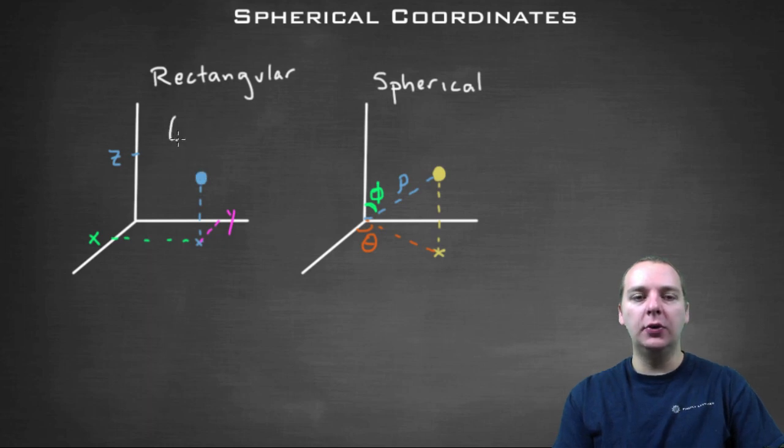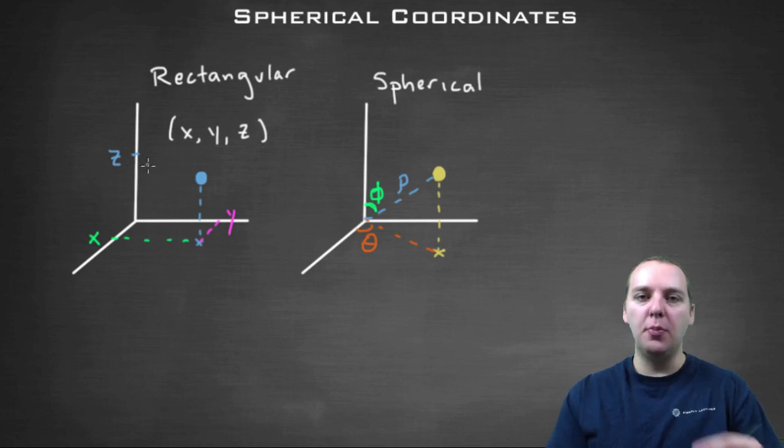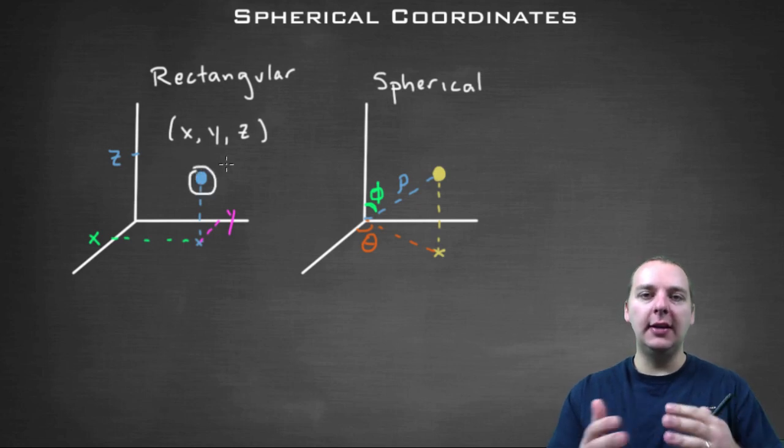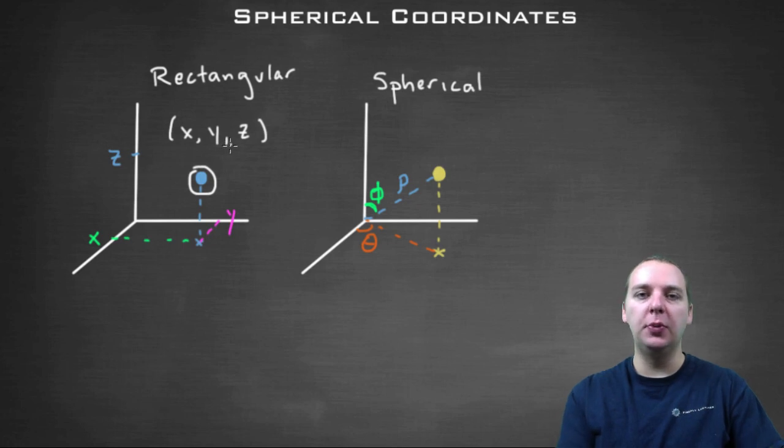It's where you have an ordered triple (x, y, z), and then you find the location of x, y, and z on all their respective axes. Then you find where these merge or meet in space, and that location is uniquely identified as a point in space that corresponds to this ordered triple.